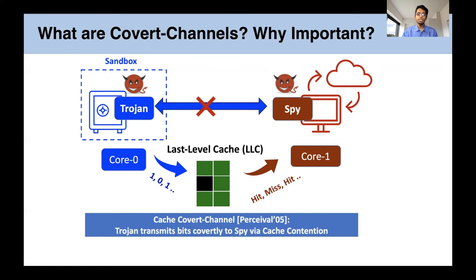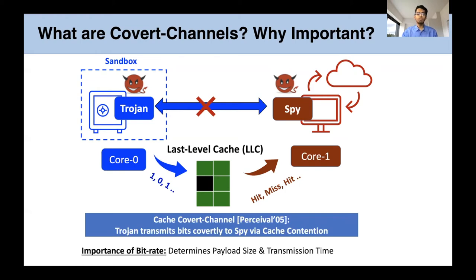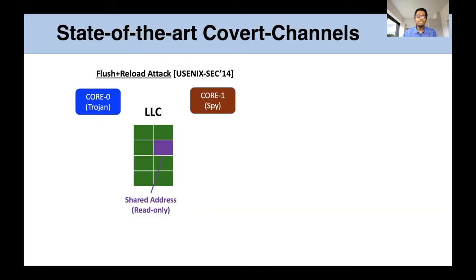Such covert channels have been leveraged in recent transient execution attacks like Spectre and Meltdown because they allow high bit rates and low error rates. The bit rate of transmission in covert channels is an important consideration as it determines how large the payload can be and how fast the payload can be transmitted. The state-of-the-art cache covert channel attacks are largely flush-based attacks that use cache contention on a single shared address to transmit information.